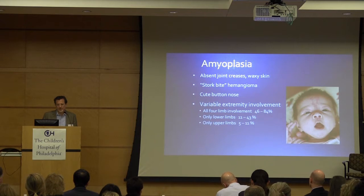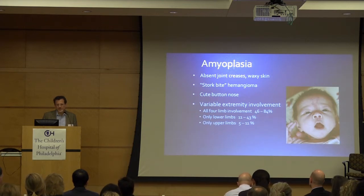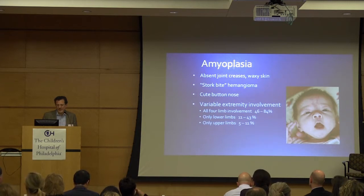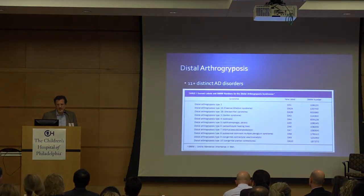Cute button noses, variable extremity involvement. Most kids have all four limbs involved. Mary Beth has published a paper on asymmetric involvement of the upper extremities and the need for imaging from that. But overall, it tends to affect both upper limbs and lower limbs, and most often all limbs.